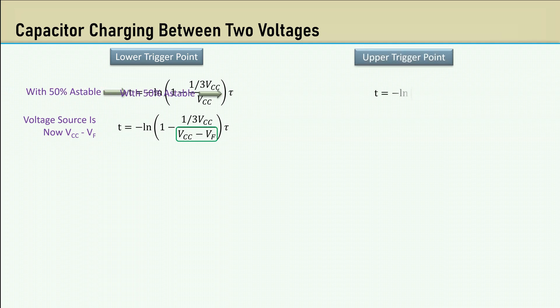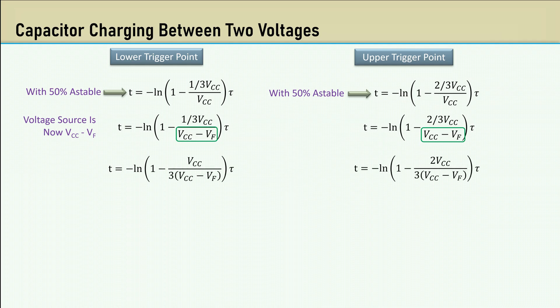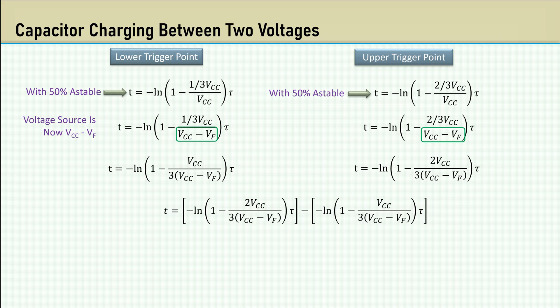In the case of the astable with 50% duty, the charging voltage supply was VCC and the upper threshold voltage was two-thirds VCC. In this case, the threshold voltage is still two-thirds VCC, but the capacitor is charged and discharged through a diode, so the voltage source is now also VCC minus VF. Let's get rid of the fraction in the numerator and subtract the lower trigger point time from the upper trigger point time, then factor out tau.